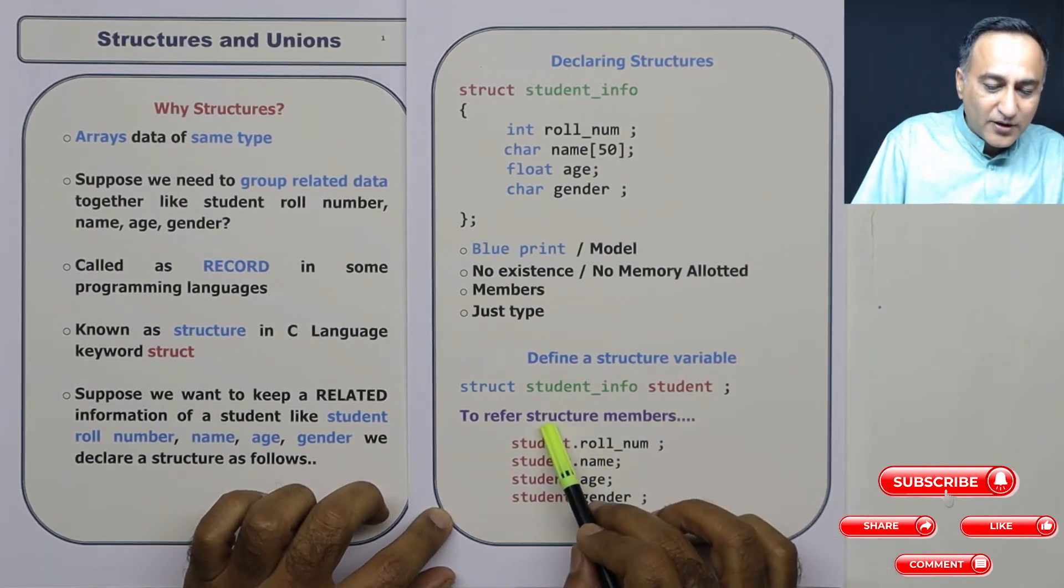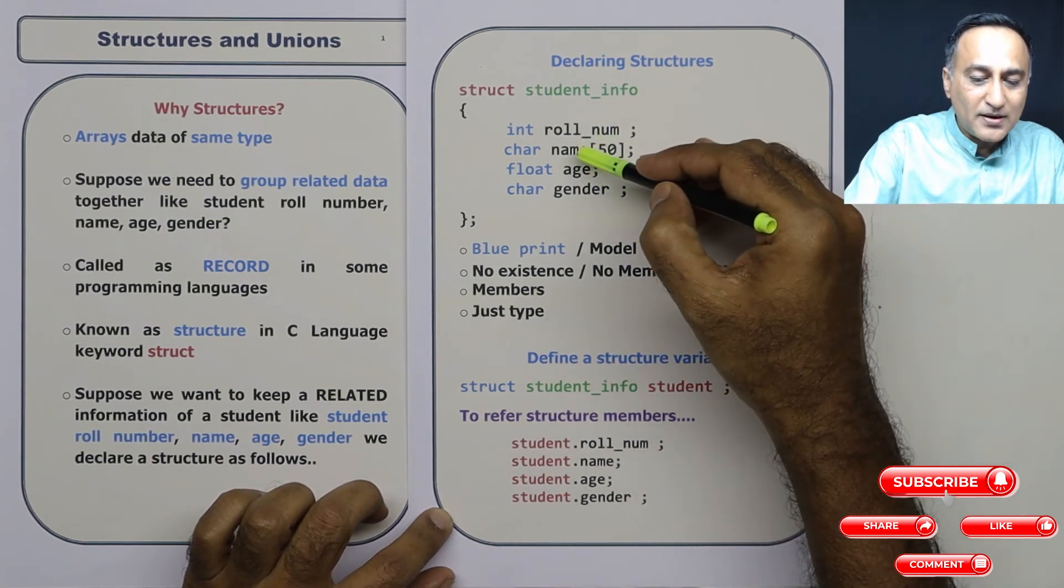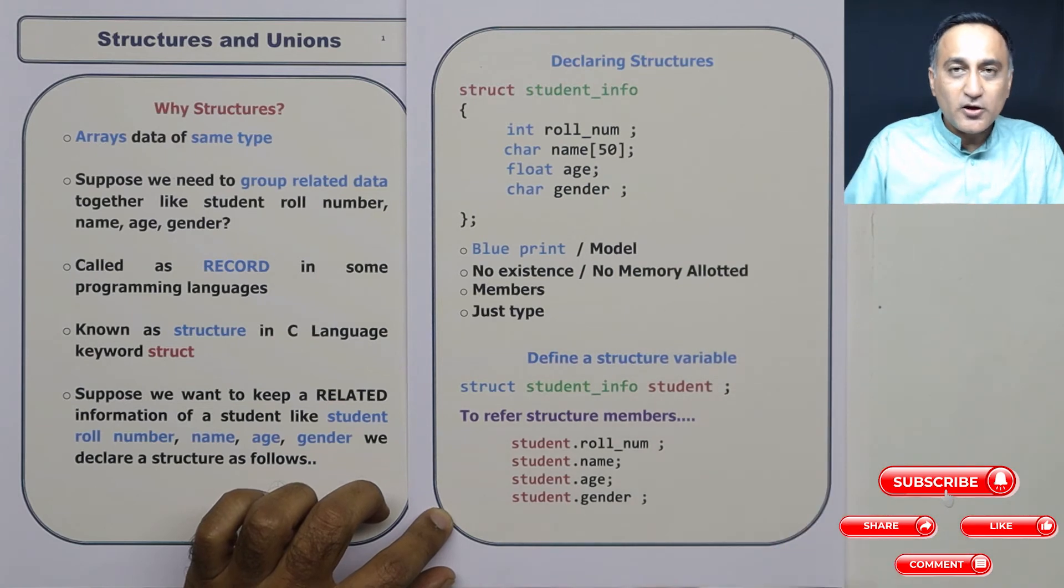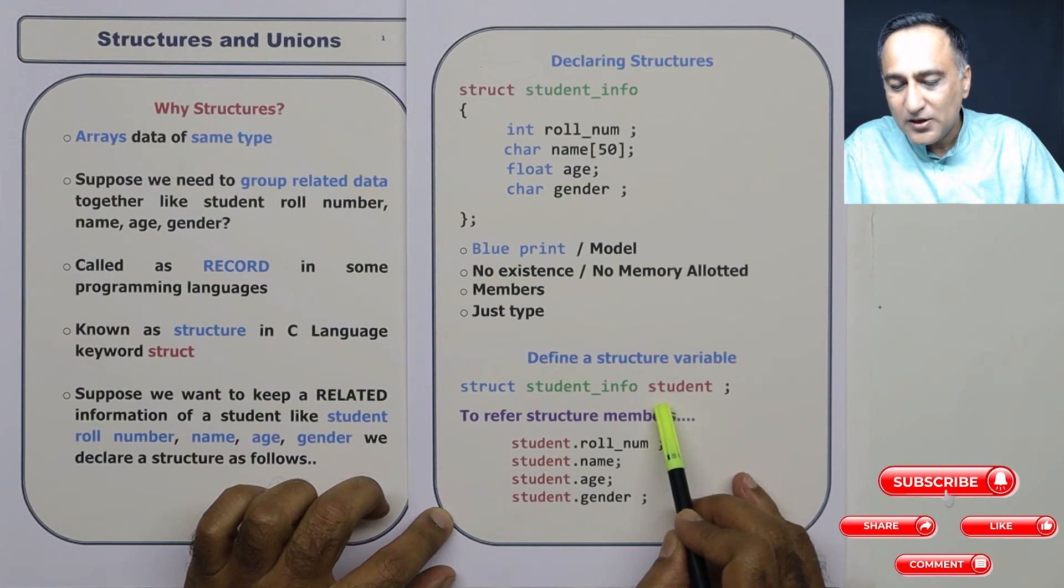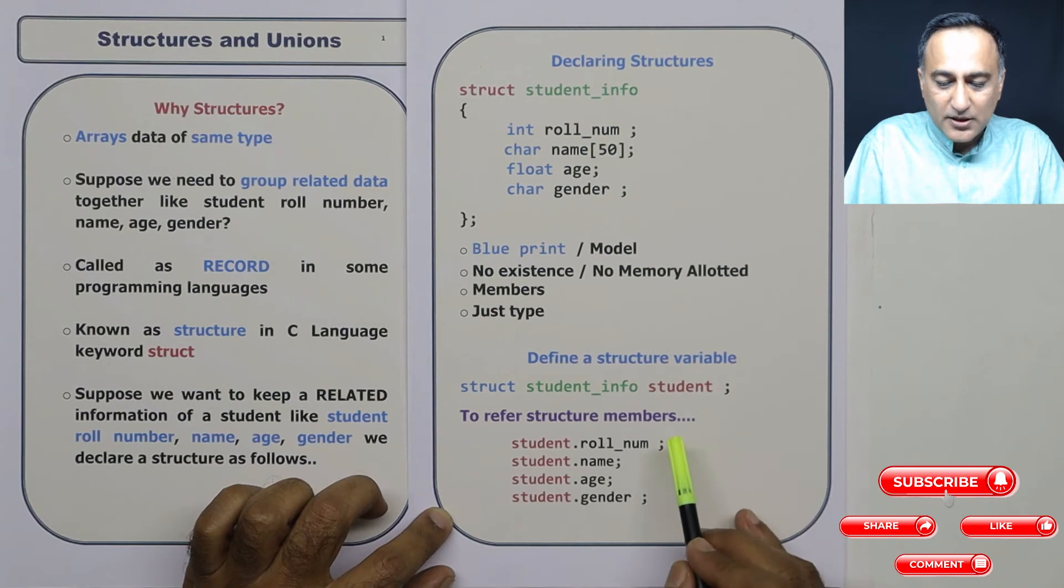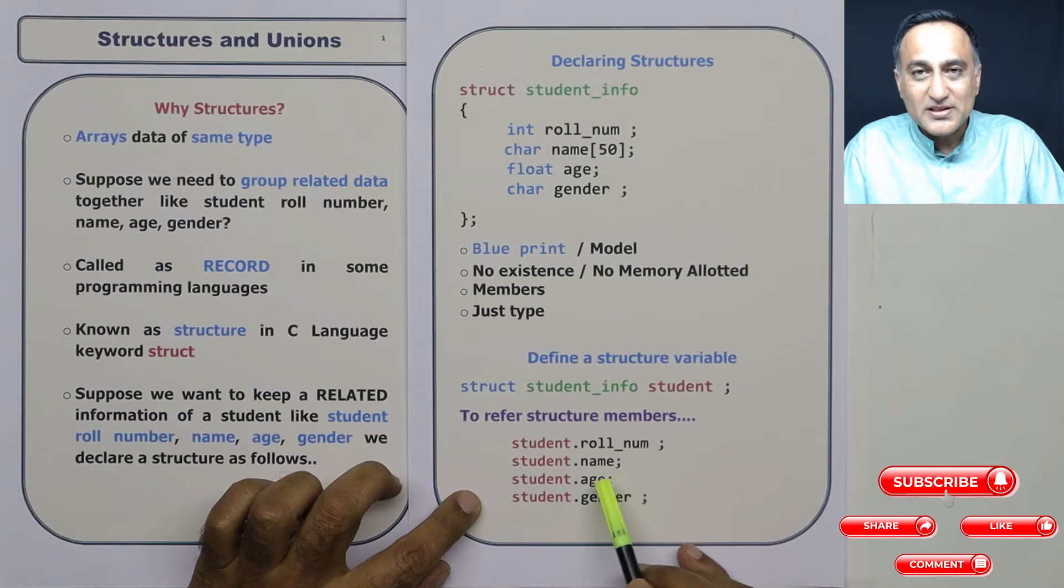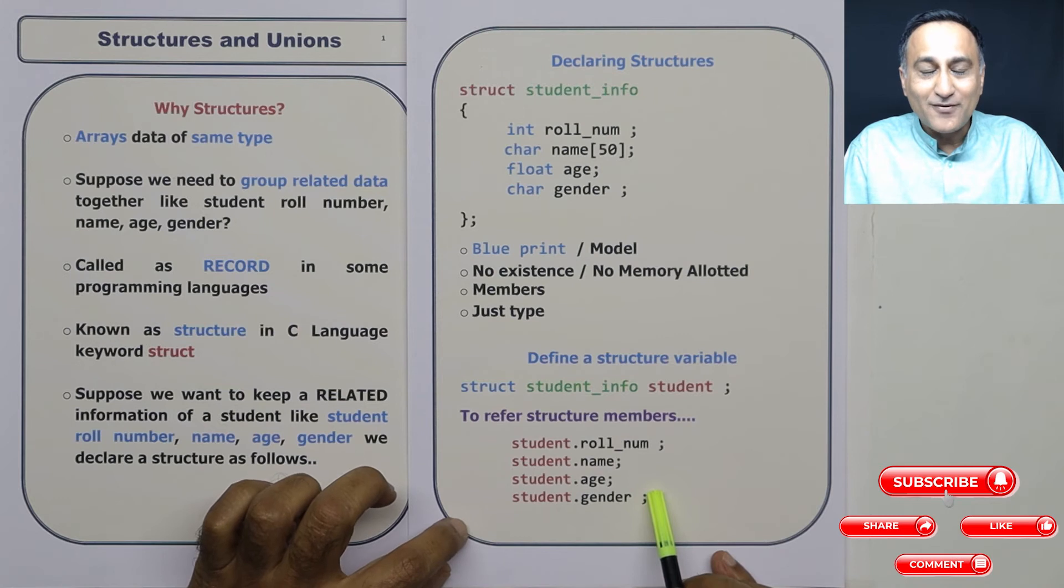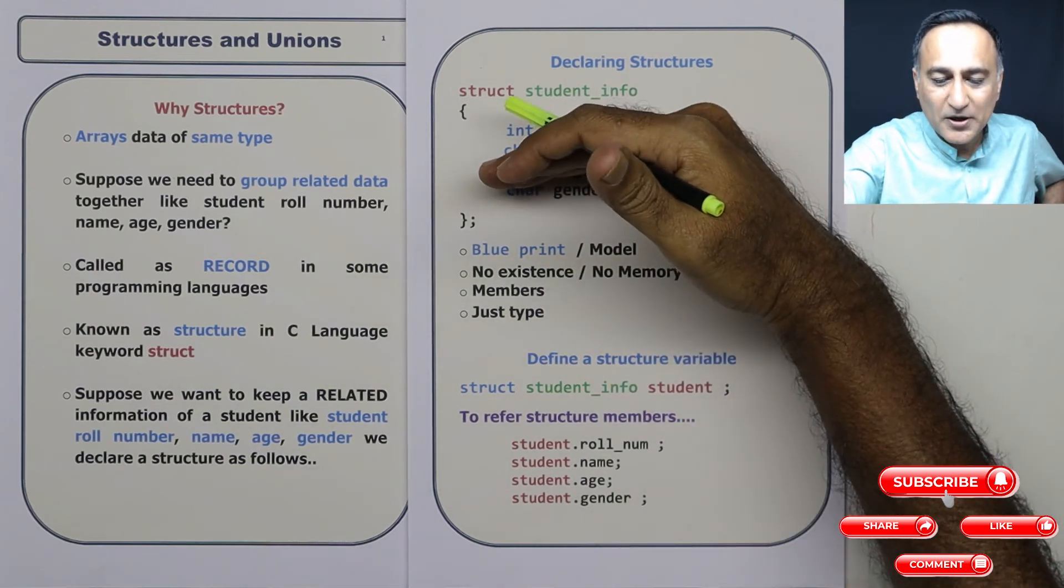Now if you have to refer to all the individual members, you don't directly say role number, name, age and gender, you got to use something called as the dot operator. And using the dot operator, you will refer to the individual members. For example, to refer to student number, you will say student dot role number, to refer to name you will say student dot name, to refer to age you will say student dot age, to refer to gender you will call student dot gender.